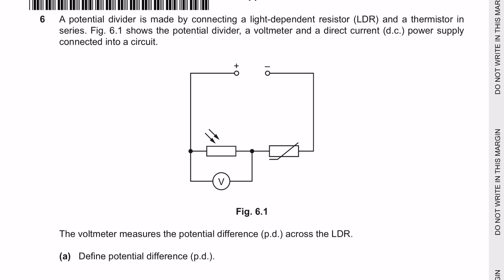A potential divider is made by connecting a light-dependent resistor and a thermistor in series. Figure 6.1 shows the potential divider, a voltmeter and a direct current DC power supply connected into a circuit. The voltmeter measures the potential difference across the LDR. This is the LDR, this is the thermistor and a voltmeter placed across the component.